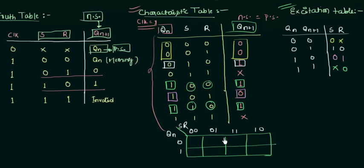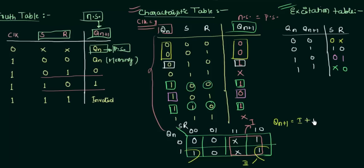Filling the K-map for QN+1 with values 0, 0, 1, X, 1, 0, 1, X. Now let's do the pairing. The first group combines 2 don't cares and 2 ones. The second group is the other pair. So QN+1 equals group 1 OR group 2. From the first group: R is changing and QN is changing, so it simplifies to S. From the second group: S is 0, R remains 0, so it gives QN·R-complement. Therefore QN+1 = S + QN·R'.